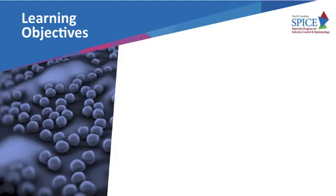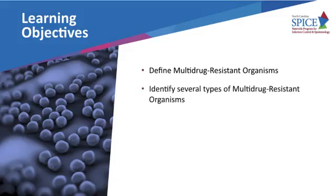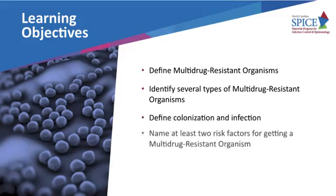There are four learning objectives for this module. You should be able to define multidrug-resistant organisms, identify several types of multidrug-resistant organisms, define the terms colonization and infection, and name at least two risk factors for getting infected with a multidrug-resistant organism.